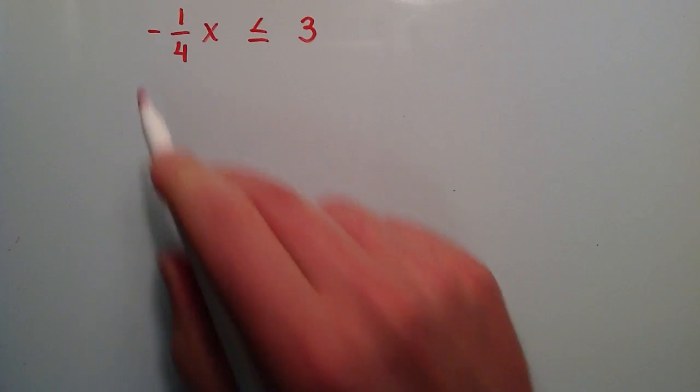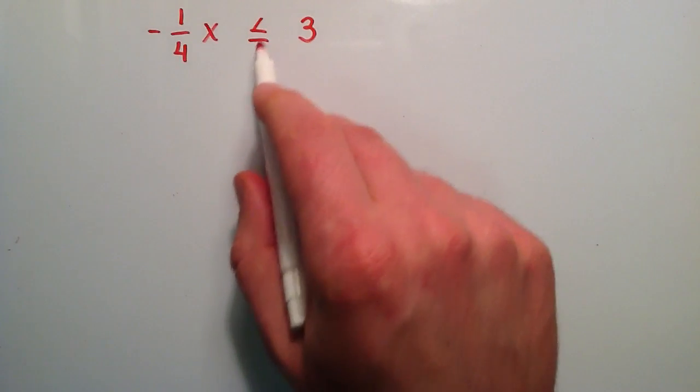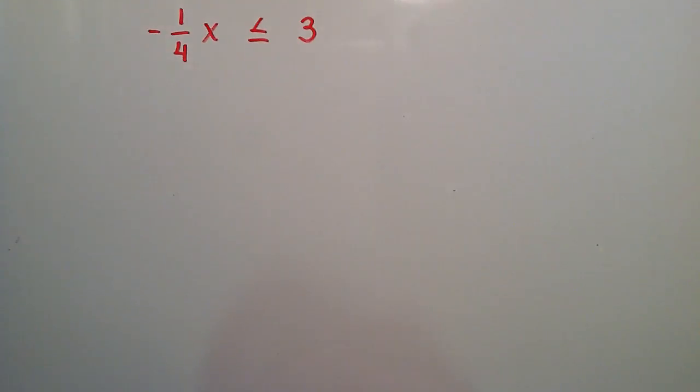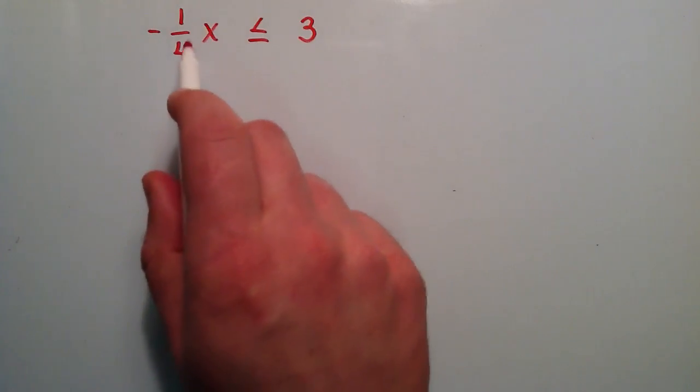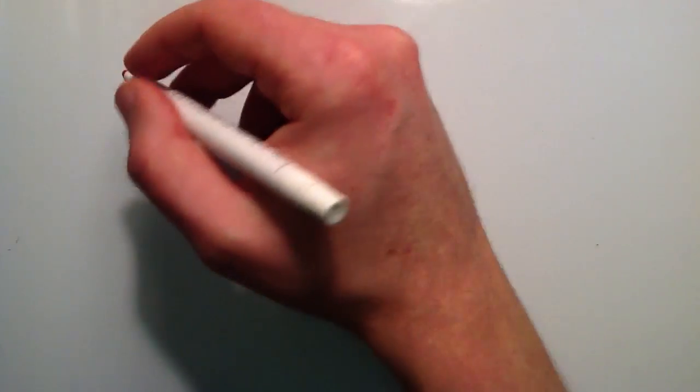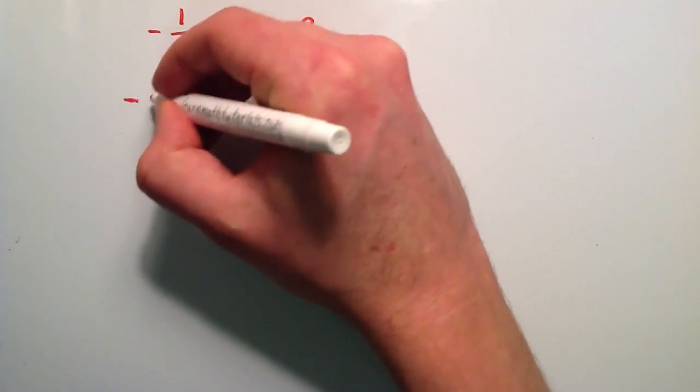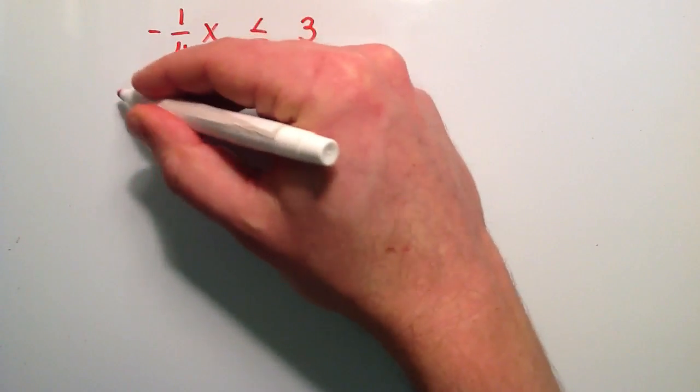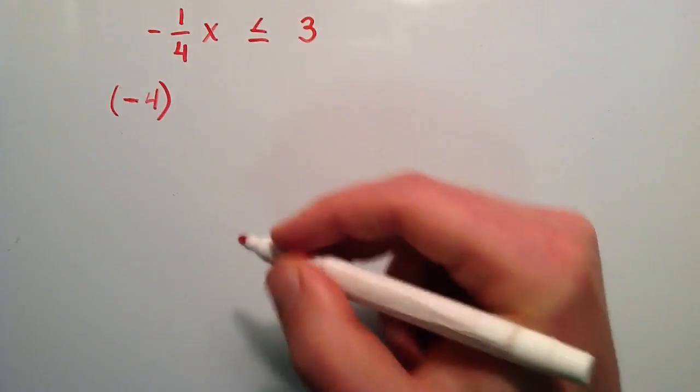So this first one here we have negative 1 over 4x is less than or equal to 3. What we want to do is get x by itself on the left hand side. So in order to do that we simply need to multiply the left hand and the right hand side by a negative 4.